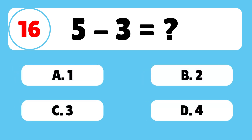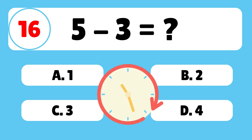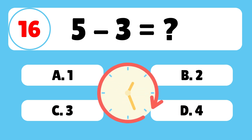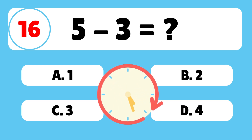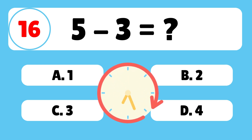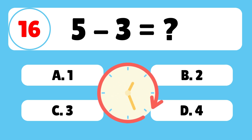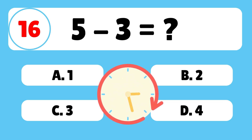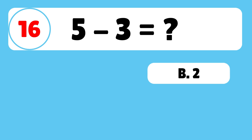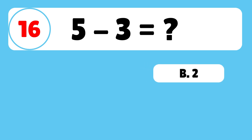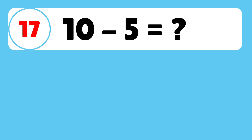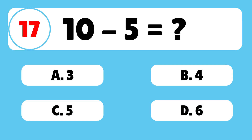Question 16: What is 5 minus 3? The answer is B. 5 minus 3 is equal to 2. Question 17: What is 9 minus 2?